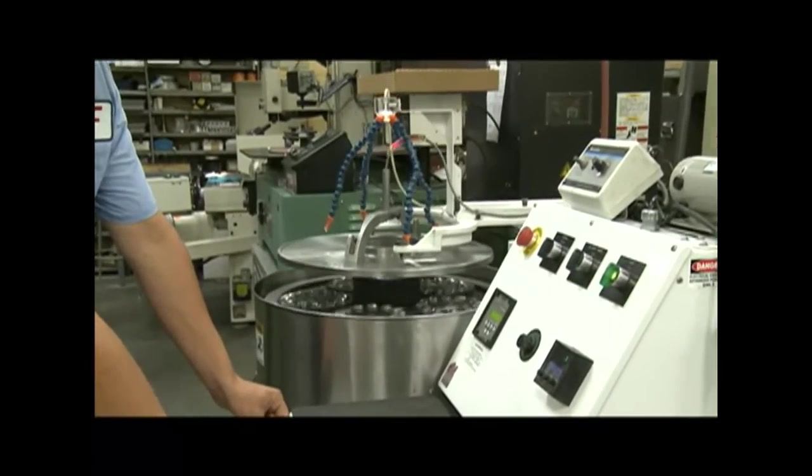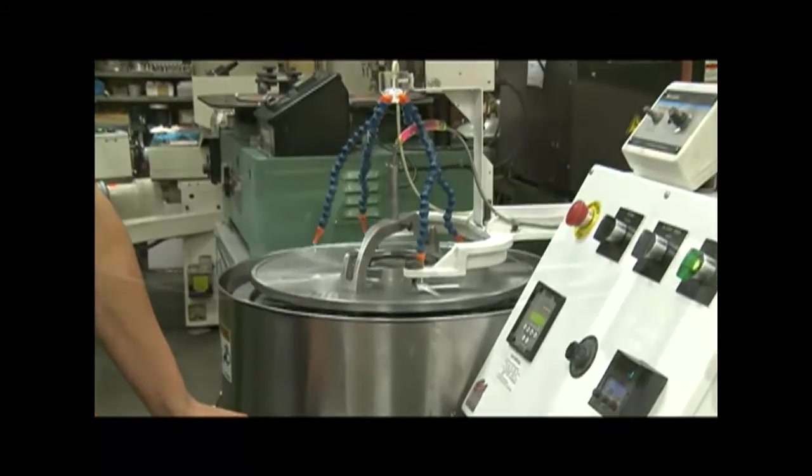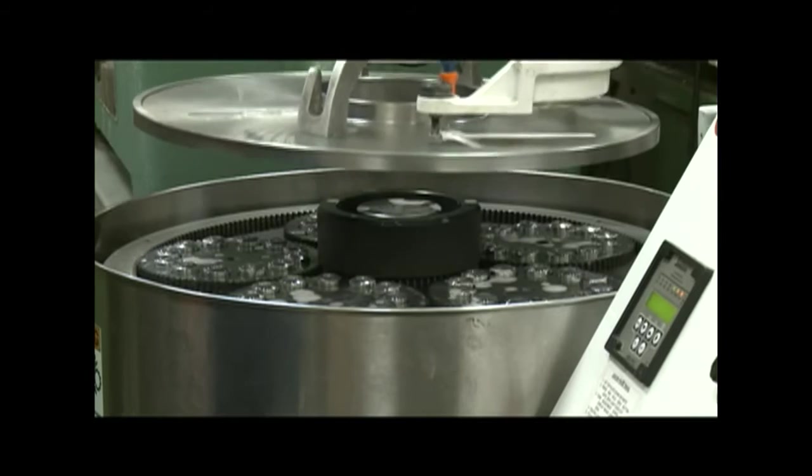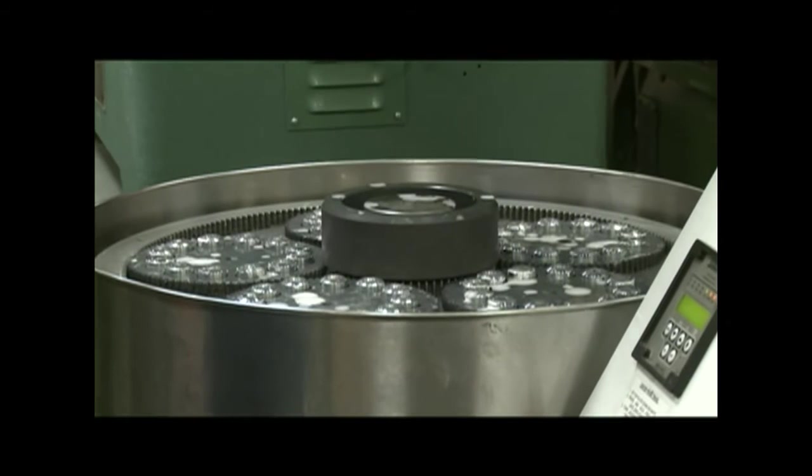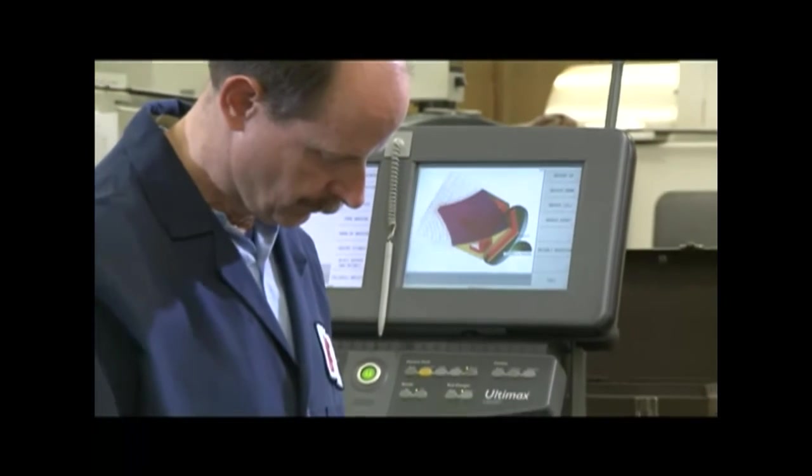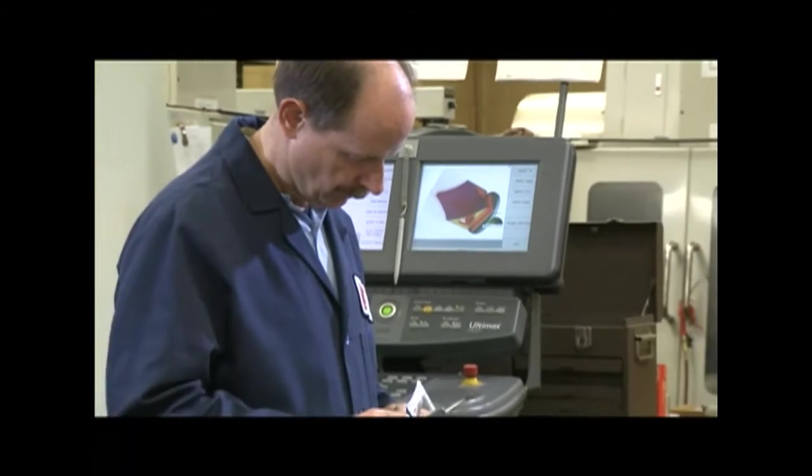Our slurries are prepared at KAF and delivered to the lapping surface via a computerized pumping station. Size control is automated by virtue of a computer-monitored position probing system. We have the inspection equipment necessary to measure the flatness and parallelism achieved.